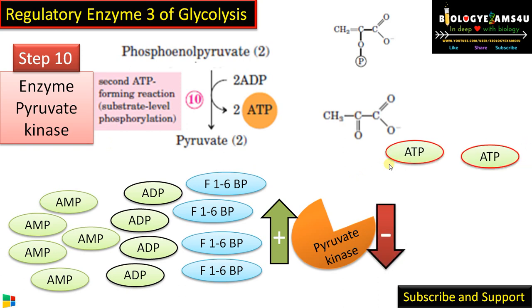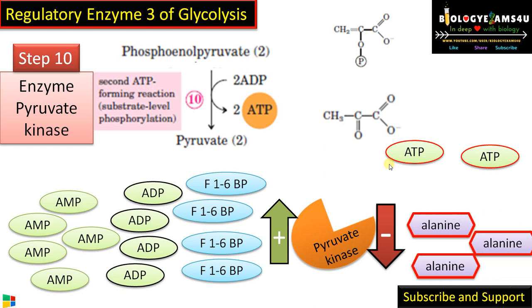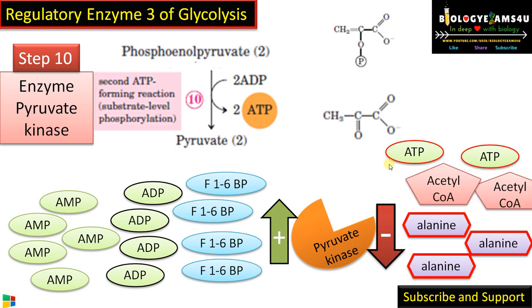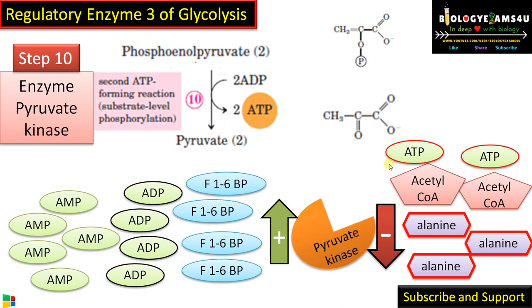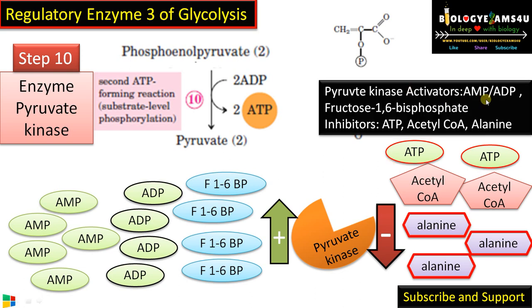Pyruvate kinase is inhibited by ATP, indicating excess energy, and also by alanine — a metabolite that can be easily converted to pyruvate — and by acetyl coenzyme A, which is formed in the link reaction between glycolysis and the Krebs cycle, indicating excess metabolites downstream. In short, pyruvate kinase is activated by AMP, ADP, and fructose 1,6-bisphosphate, and inhibited by ATP, acetyl coenzyme A, and alanine.